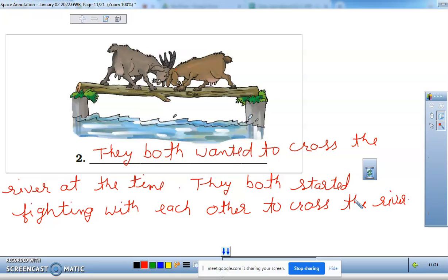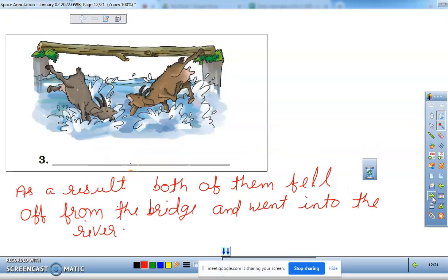They wanted to cross the river at the same time, but it wasn't possible. As a result, both of them fell off from the bridge and into the river.